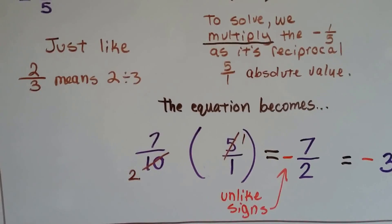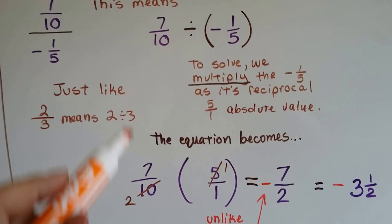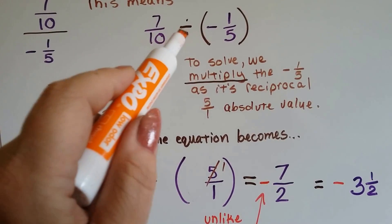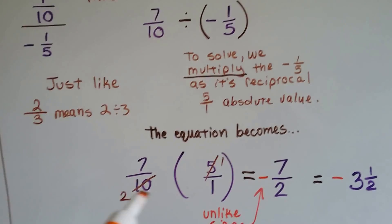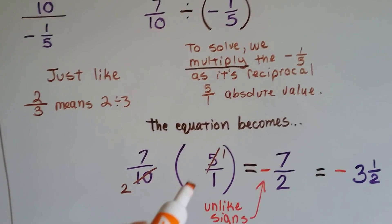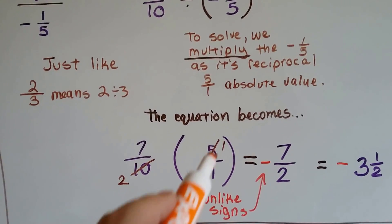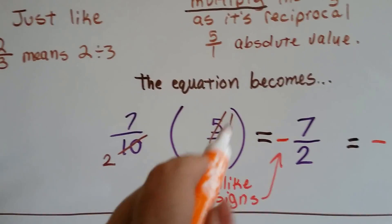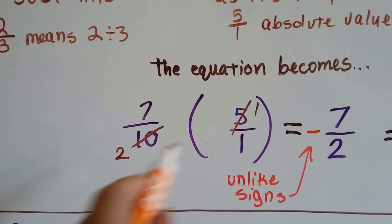So our equation, when we flip this one around, instead of having 7 tenths divided by negative 1 fifth, we end up with 7 tenths times 5 over 1. We can cancel out. We can factor out that 5 and the 10 as a 1 and a 2.